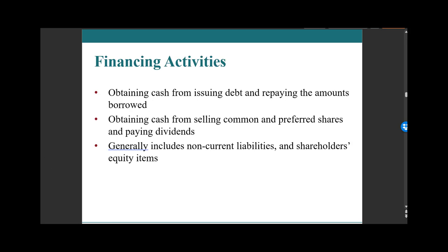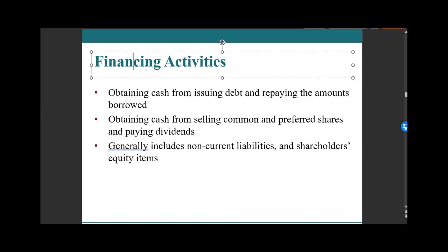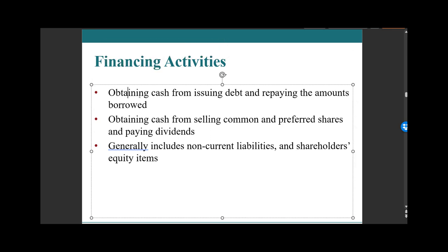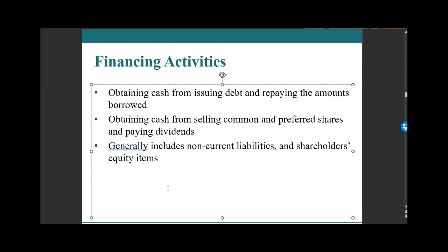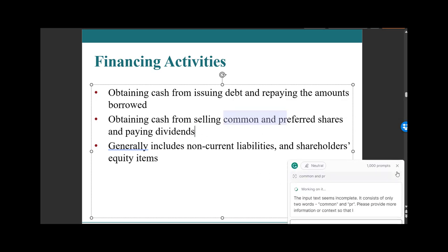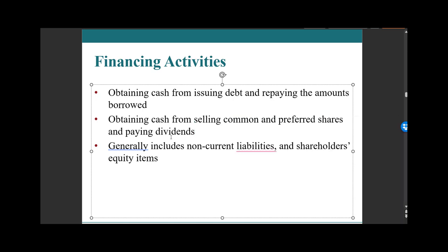Next, our financing activities. This is our long-term liabilities and equity section of our cash flows. This is how we're financing — hopefully just our investing activities, because we don't want to be financing operations. We want operations to be generating cash flows, meaning we're sustaining ourselves off of our purpose of being in business. This includes issuing debt, repaying amounts borrowed, issuing common and preferred shares, paying dividends, and repurchasing common and preferred shares.